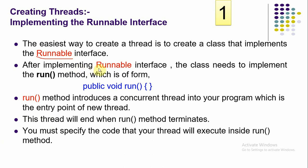The Runnable interface does not need to be imported — it is already included via the java.lang package. This interface has only one abstract method called run(). The syntax is: public void run(). You have to implement this method in a class. The run method introduces a concurrent thread into your program — it is the main method of a newly created thread. Whatever task you want the thread to perform, you write the logic inside run().